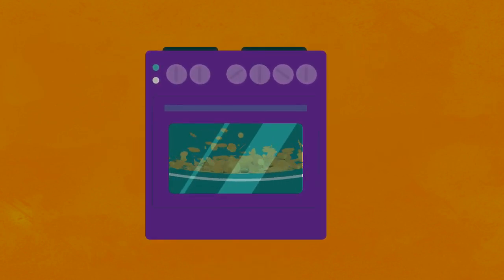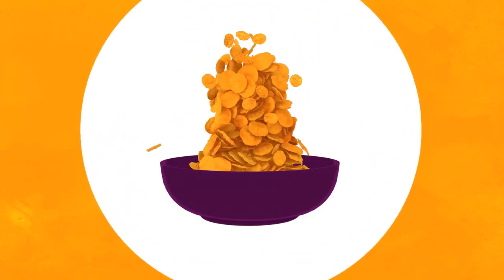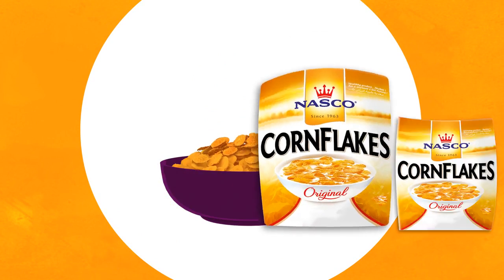Later, they are popped into the oven to toast. Then, sifted again to make sure only the toasted golden brown cornflakes make it to your cereal bowl.